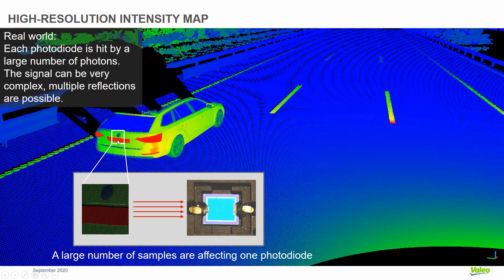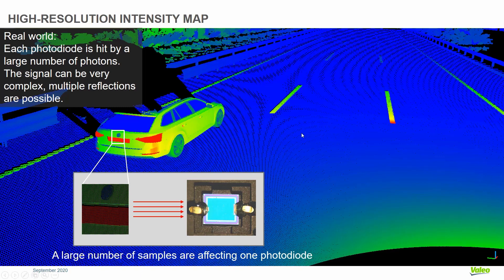To simulate this effect, we construct this very high resolution intensity image of our scene. Then we collect the relevant pixels which will be affecting one photodiode. We integrate the signals of all these pixels to generate the signal that our real LiDAR sensor would see in the complex world. Each photodiode is not only affected by one pixel in the simulation, but by several hundreds of pixels.